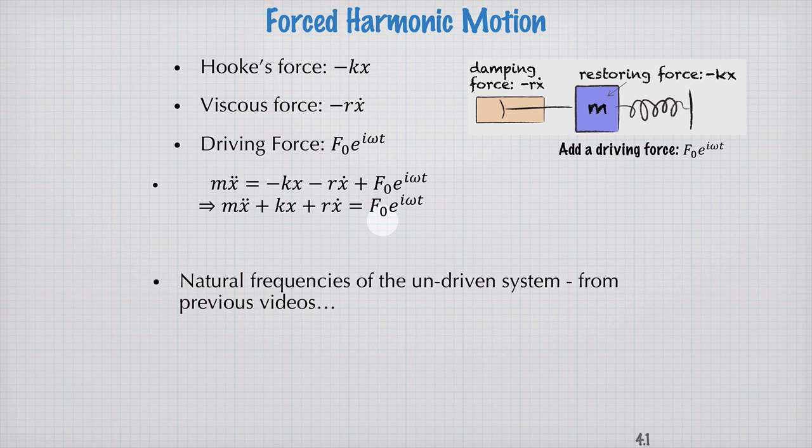Just to remind you, the natural frequencies of the undriven system from the previous videos were gamma, the damping rate r over m, omega 0 squared is k over m, and omega dash squared was given by omega 0 squared minus gamma squared over 4. And these frequencies will come in our derivation as we work through it.